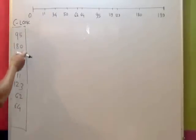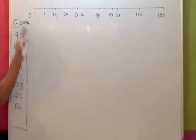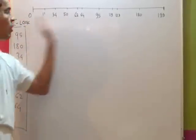95, 180, 34, 119, 11, 123, 62 and 64. We have drawn that queue onto the scale in increasing order.